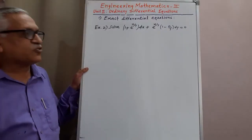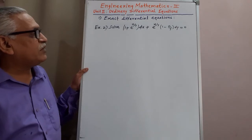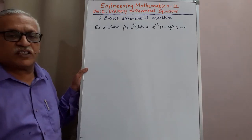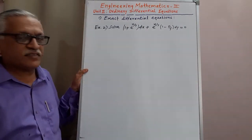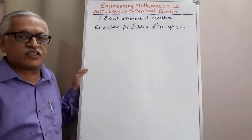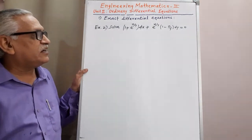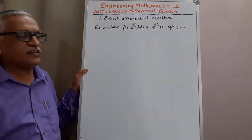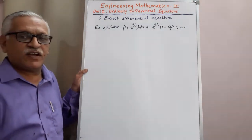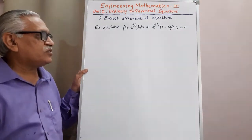Second example: Solve (1 + e^(x/y)) dx + e^(x/y) · (1 − x/y) dy = 0.